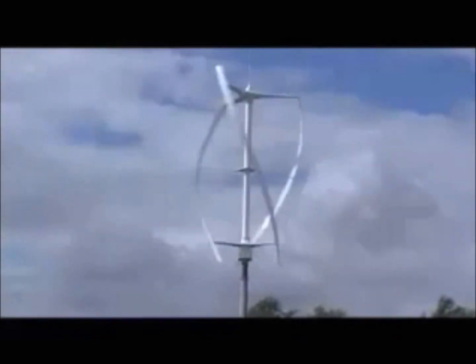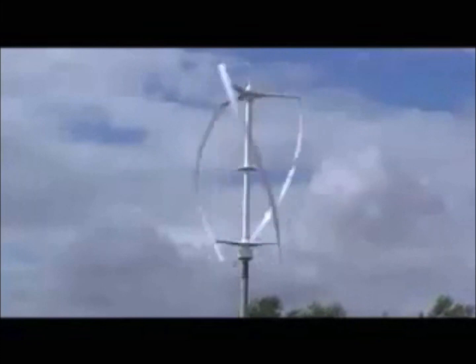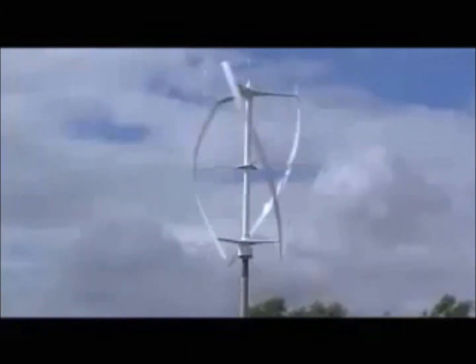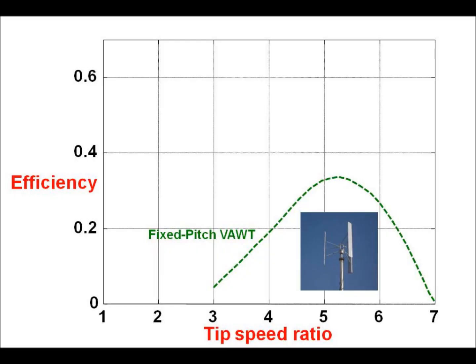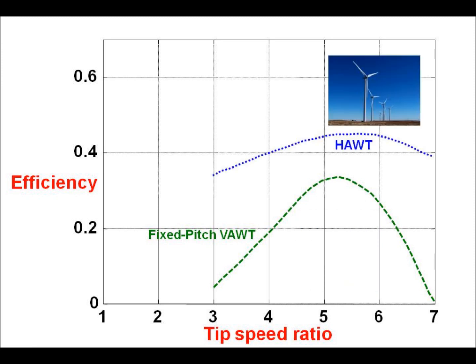Studies have shown that vertical axis wind turbines are more suitable for urban applications because they are compact, robust to changing wind conditions, and operate at low wind speeds. Most vertical axis wind turbines have fixed pitch and are not as efficient as horizontal axis wind turbines. They also do not self-start for most wind directions.